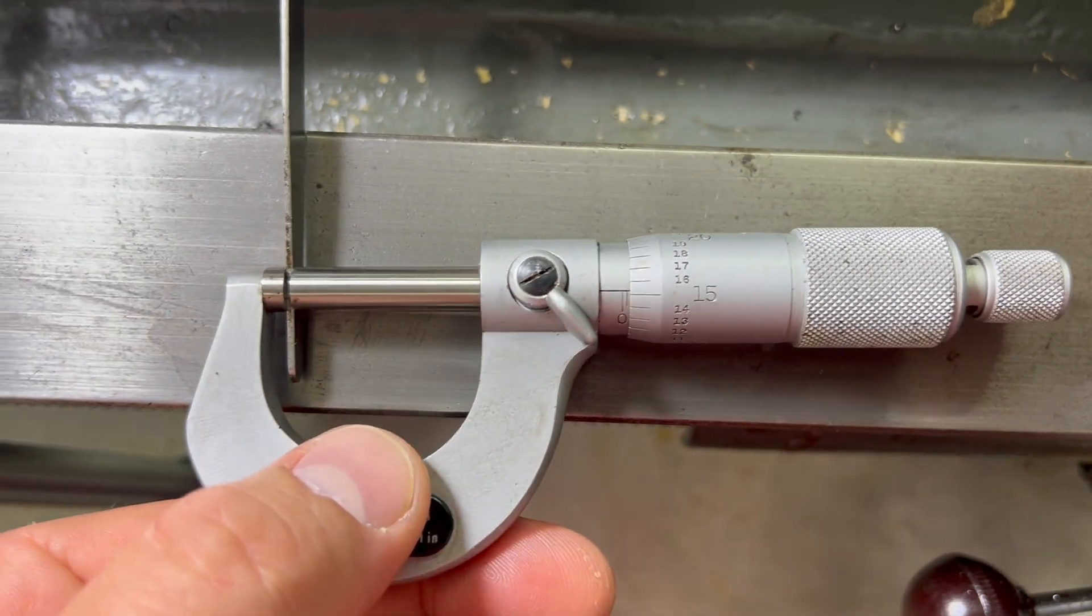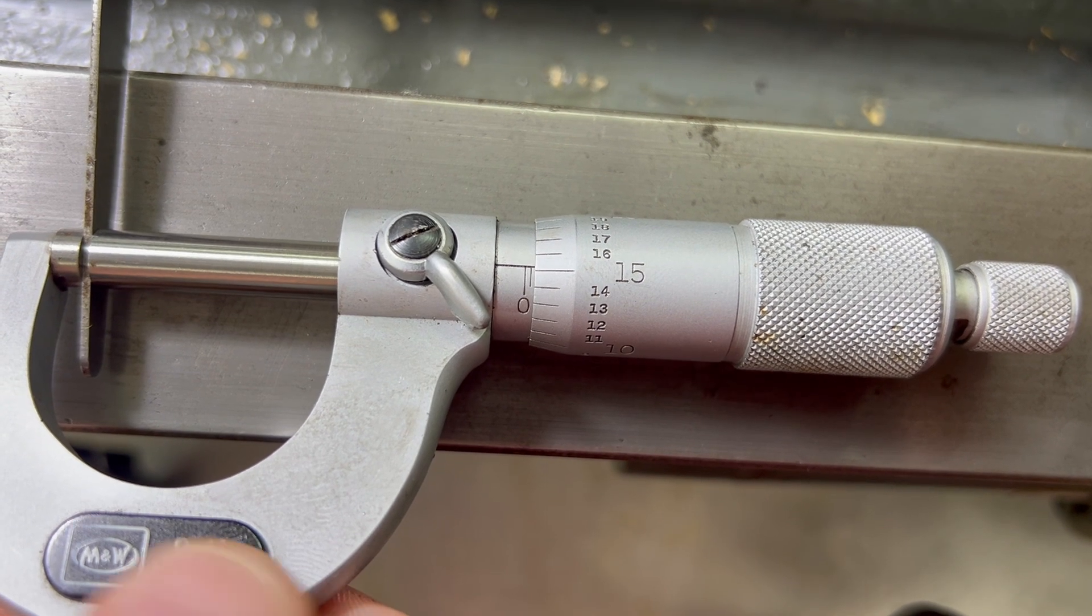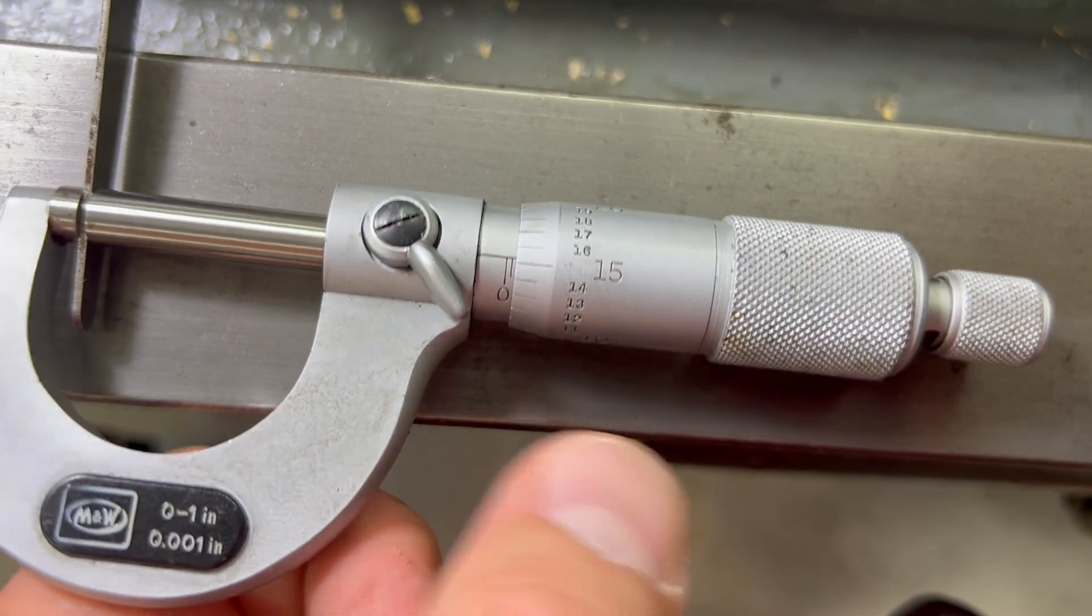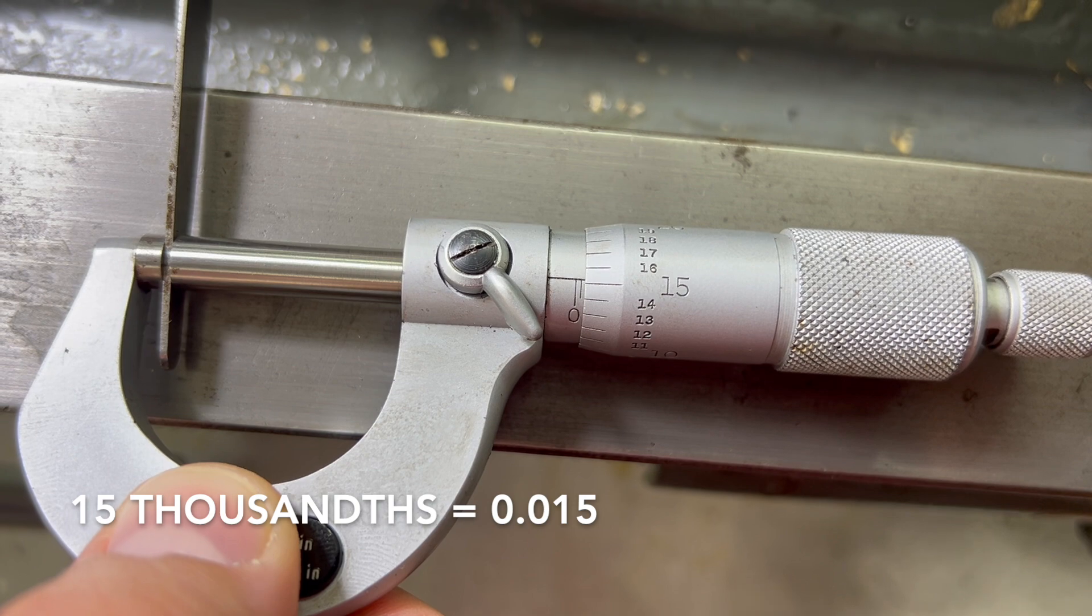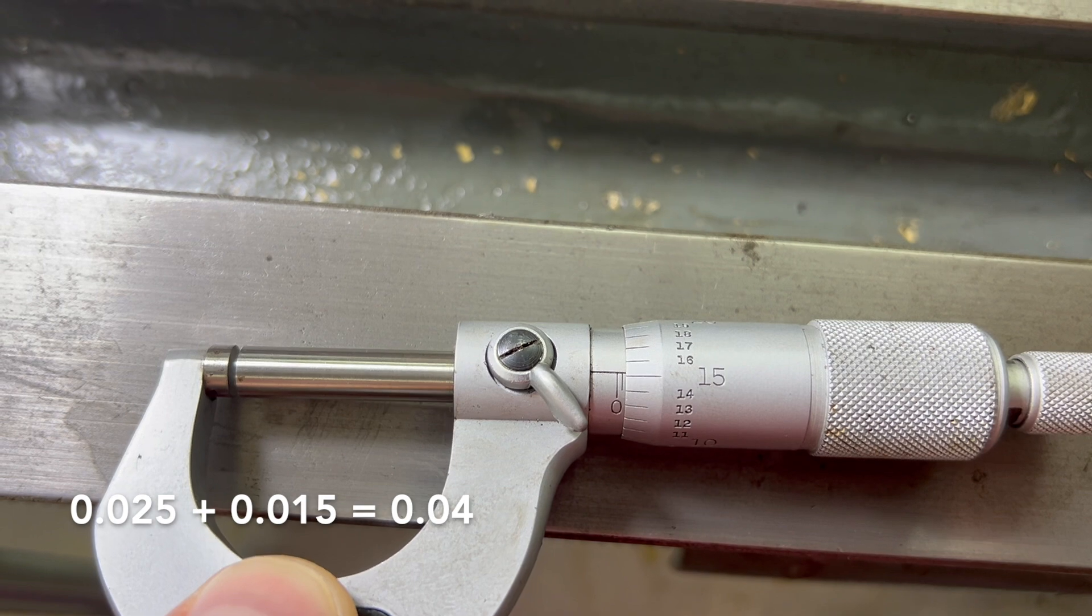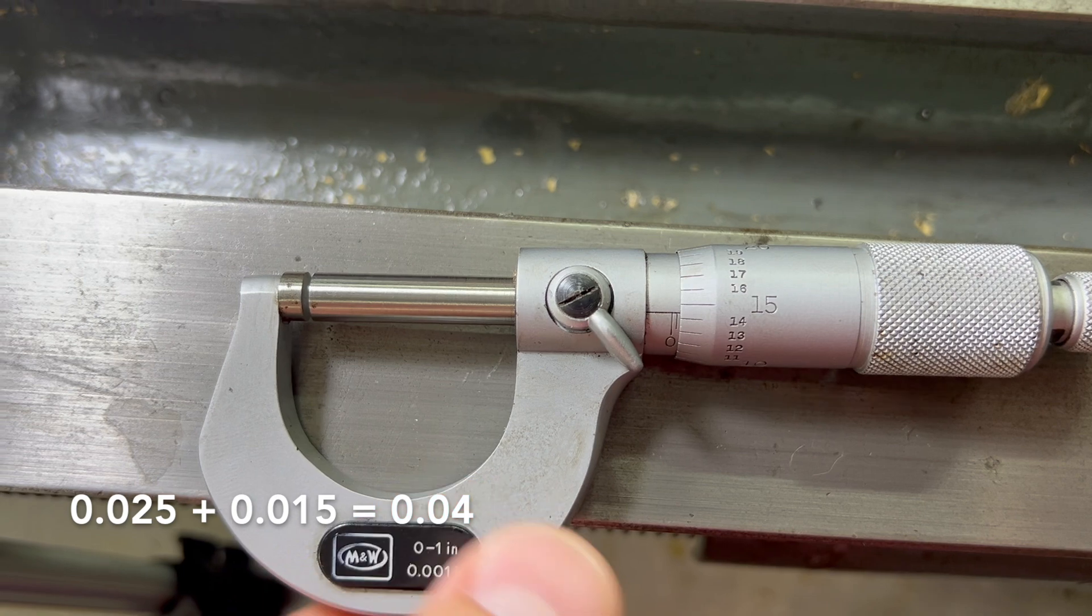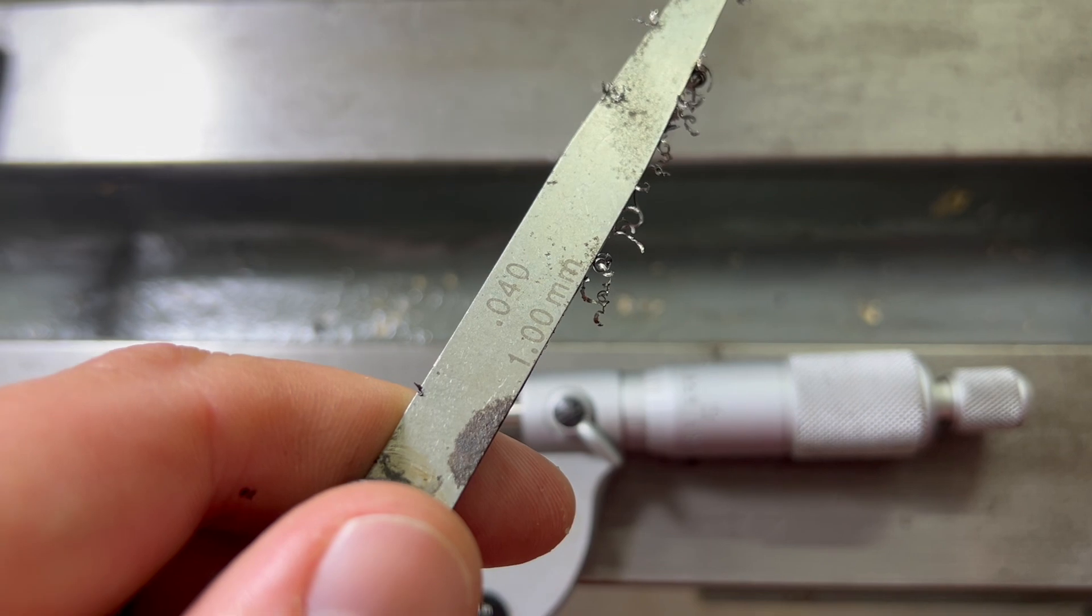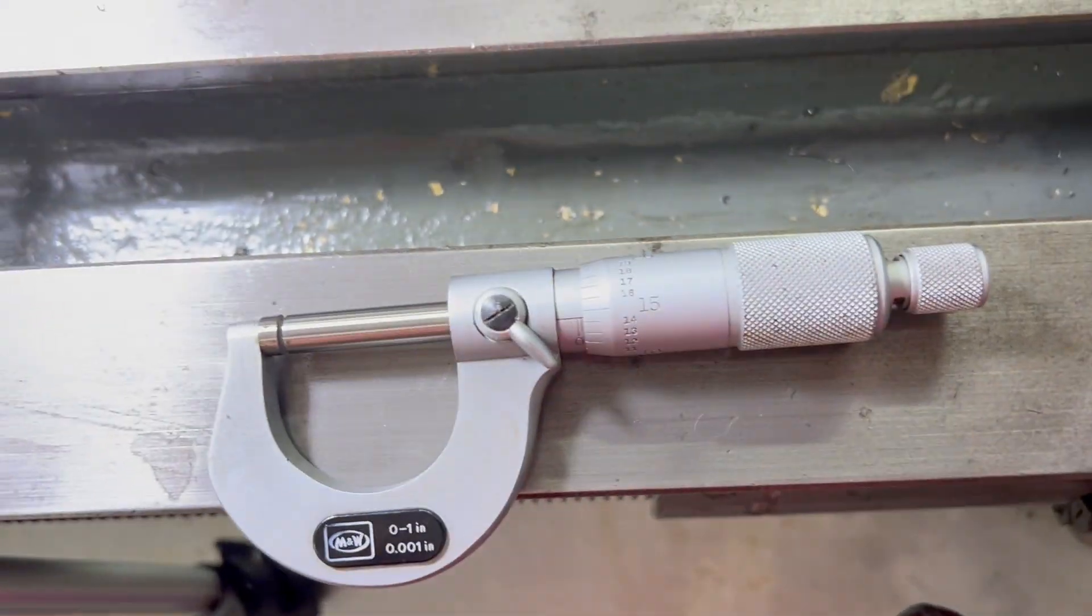So let's have a go at reading this. So here on the main shaft of the micrometer, there is 0.025. And then on the thimble, there are fifteen thousandths. Therefore, 0.025 plus 0.015 equals 0.04. Which is exactly what it shows there. So that is the micrometer. I've made that a bit of a whistle stop here because I want to keep this video fairly short.